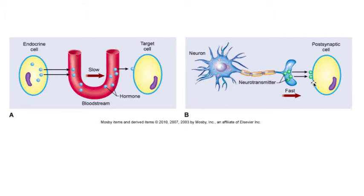With hormones, there is a lag period before the cellular response. The lag period could be immediate, hours, or days. With neurotransmitters, it tends to be much faster than that — on the order of milliseconds, typically one to two milliseconds for an immediate response.